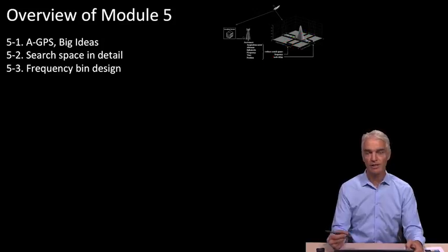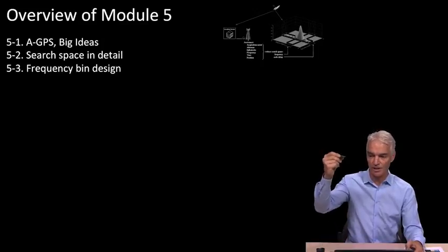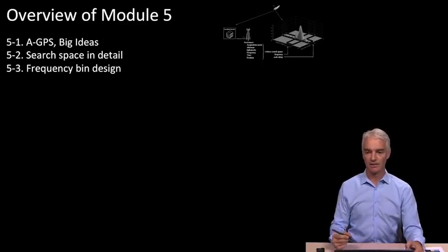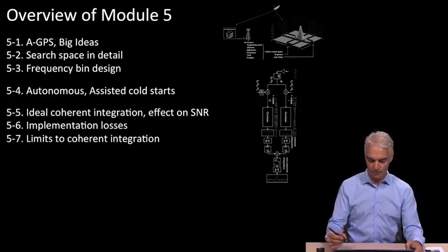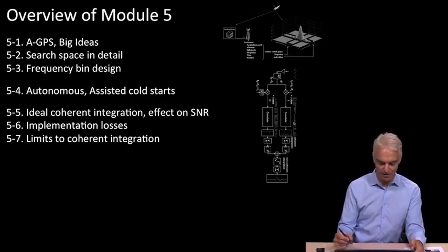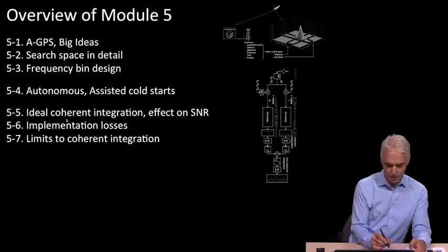And then, we're going to do something analogous to what I just showed you for the outline of Section 4. Remember, Section 4, we chased the signal from the satellite all the way through down to the receiver baseband. Here, we're going to follow the signal through the correlators, and we're going to learn about coherent integration, which occurs at this part in the receiver.